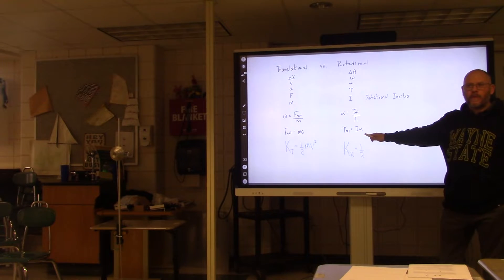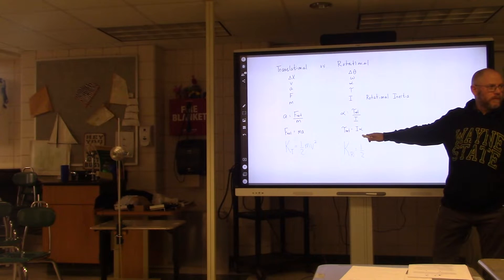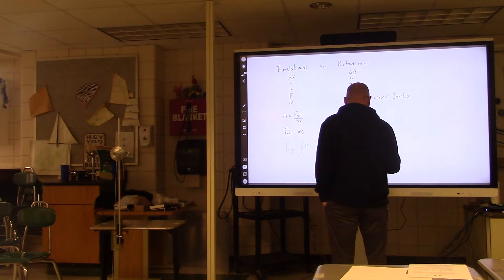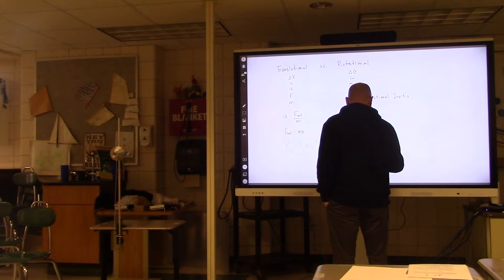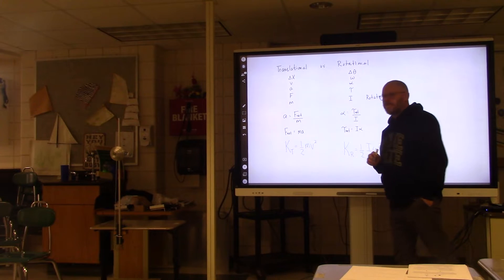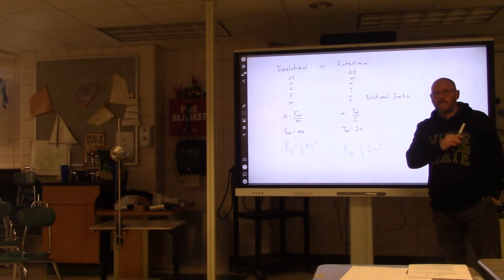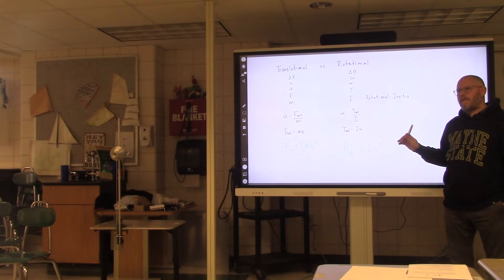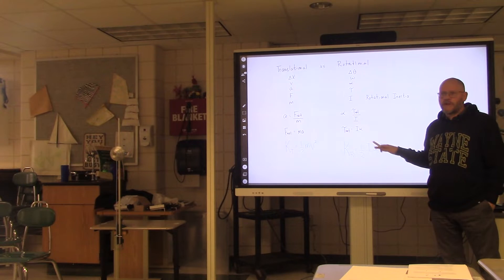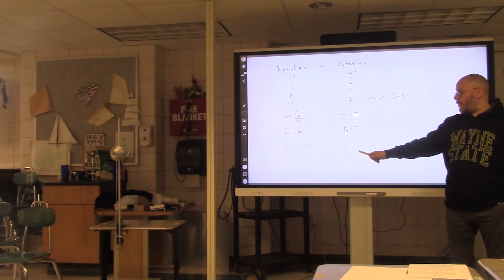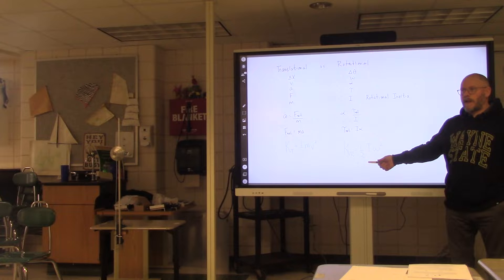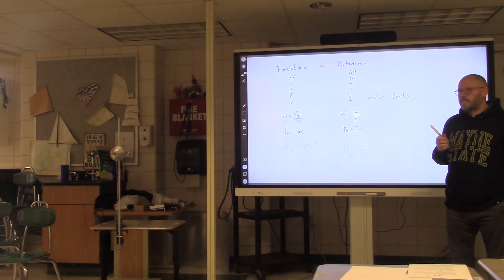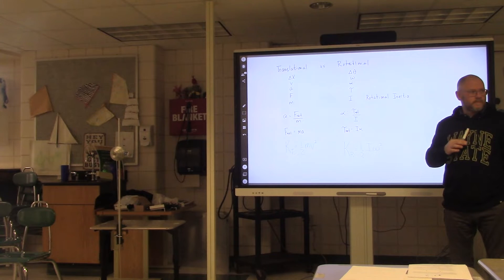We're just going to make the analog here. One half what? Not mass, but inertia. The rotational inertia times what? Omega squared. We'll probably maybe Monday talk about the relationship between these two. But if you want to solve for the rotational kinetic energy, you have to use one half I omega squared.